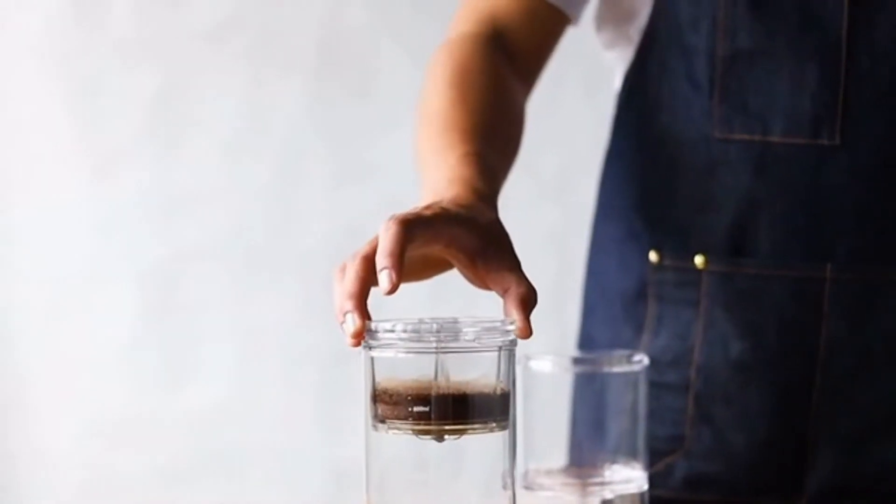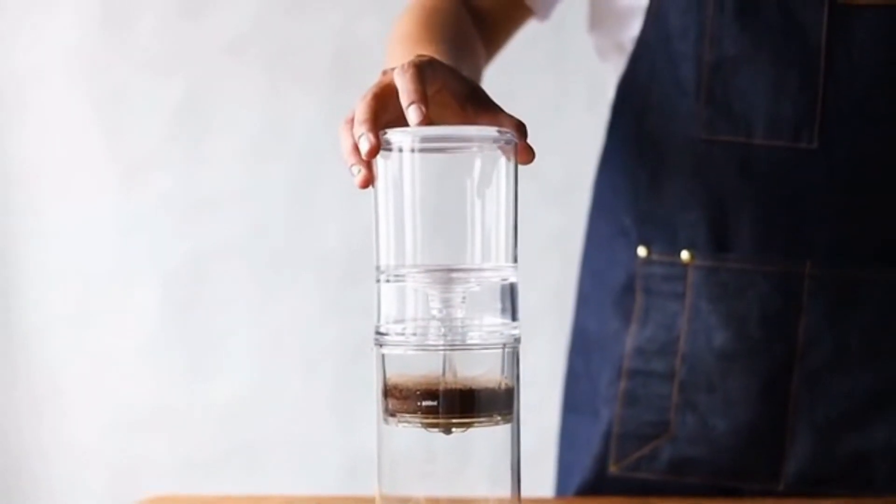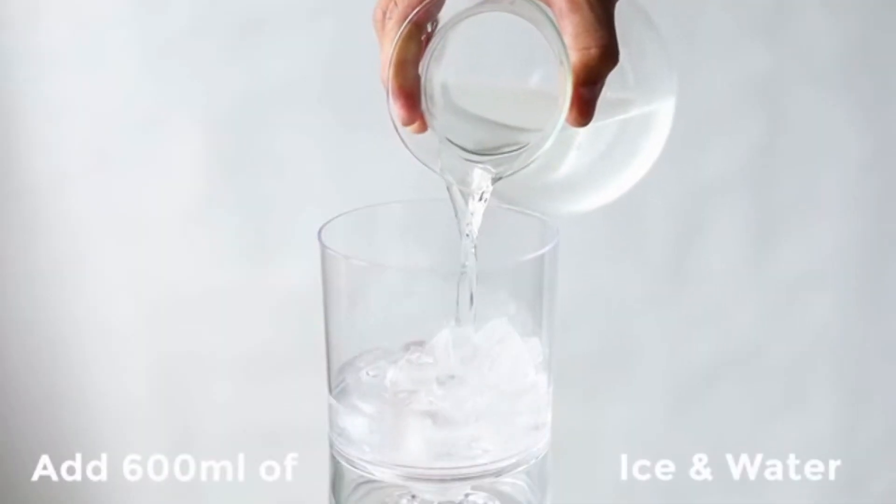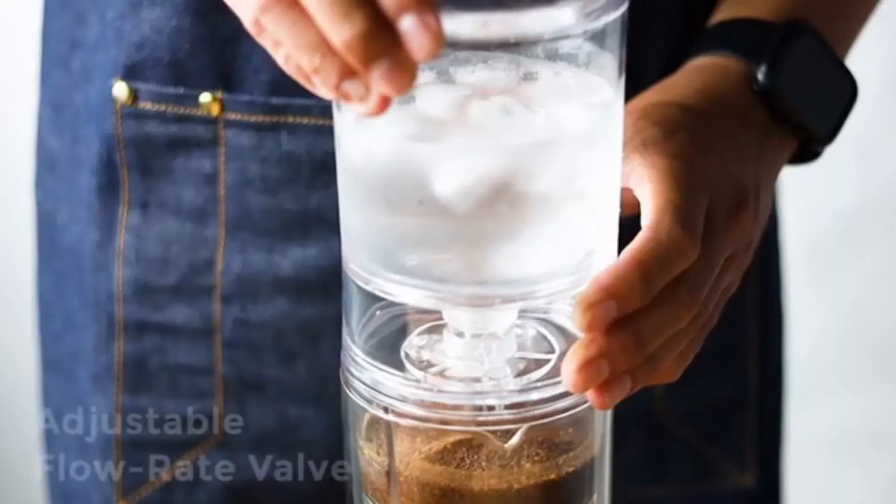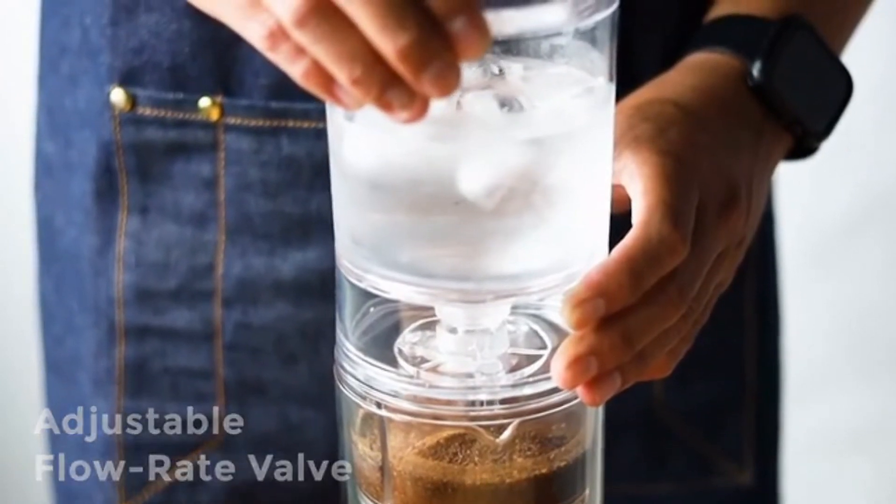Fit the drip tray over the coffee, then place the water tank on top and fill with water and ice up to the 600 milliliter marker. Twist to adjust the flow rate of the water drip valve and see the water being distributed evenly over the coffee.